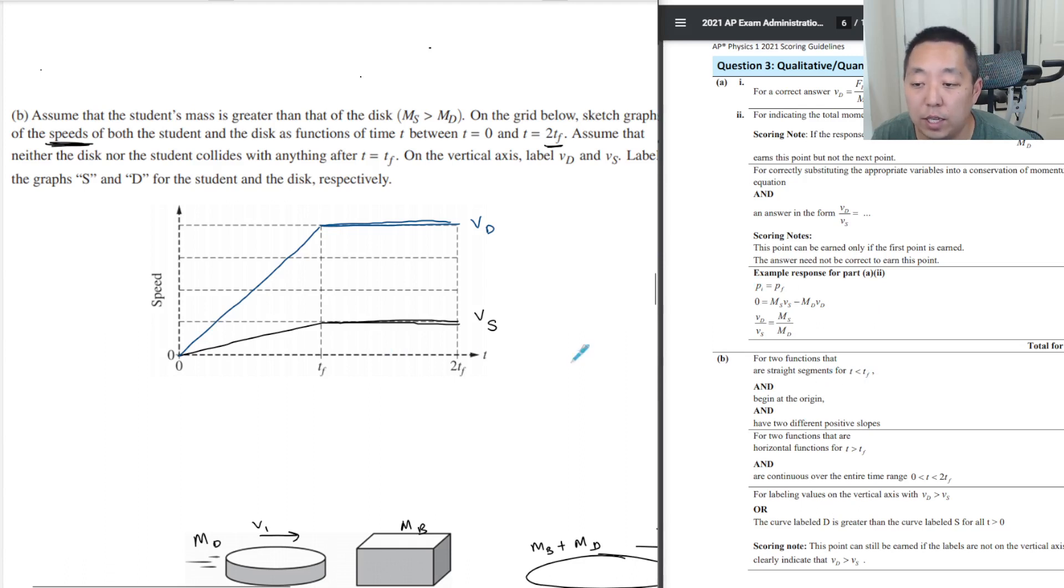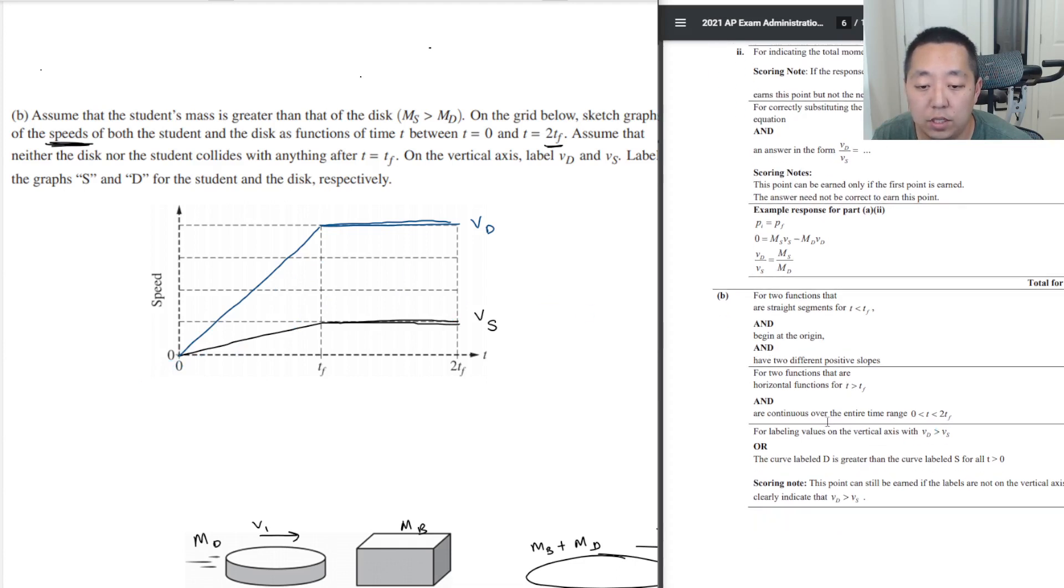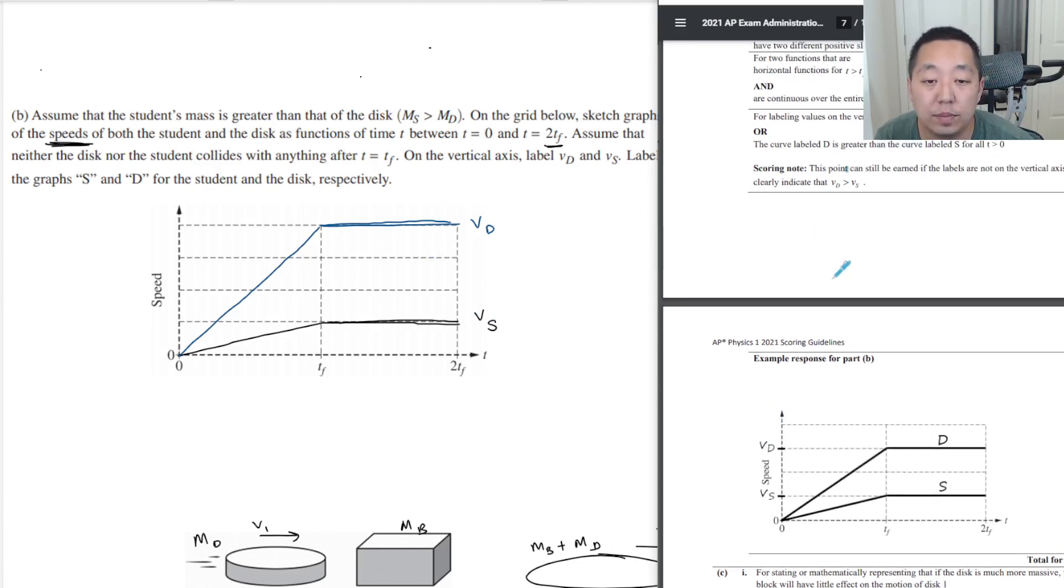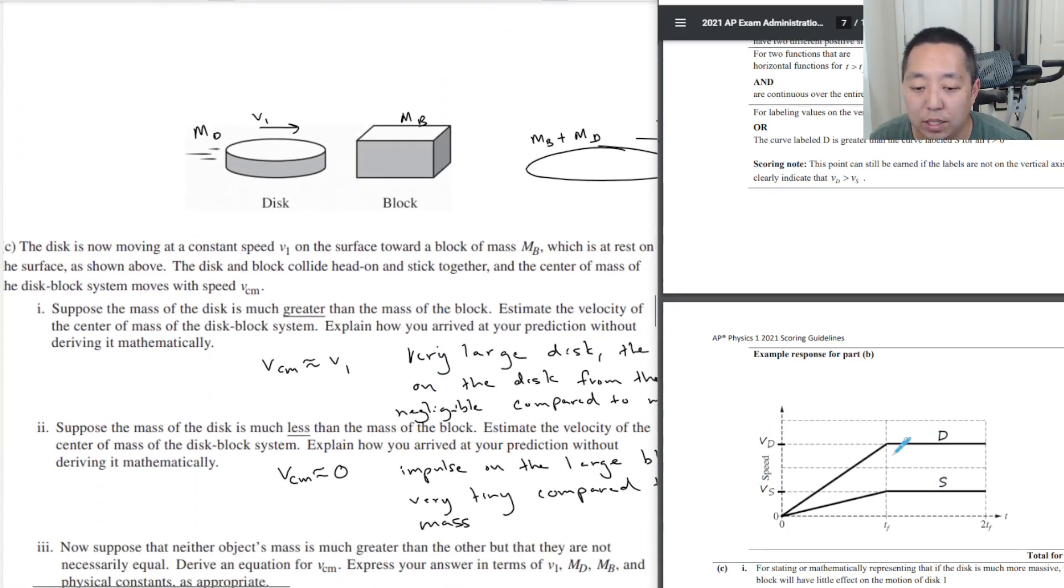For B, two functions that are straight segments for T to TF, two straight segments that began at the origin have two different positive slopes. That all looks good here. And horizontal functions over the entire range. You get one point for labeling values on the vertical axis with VD is greater than VS. I labeled those and the curve is greater. Here's a perfect example. I didn't label the axis. I should have labeled it on the left, that would have been better, but I think they'd still give you credit. I didn't label the graphs though D and S, so maybe I lost a point. This point can still be earned if the labels are not on the vertical axis but clearly indicate that VD greater than VS. So I did get credit for that. I didn't have to explicitly say D and S and VD and VS, as long as it's very clear that VD was greater than VS.